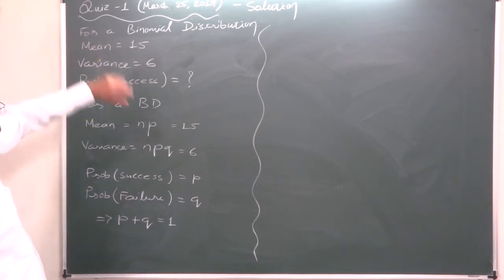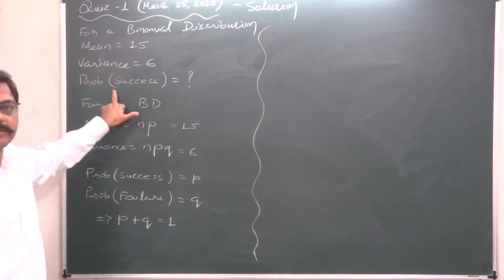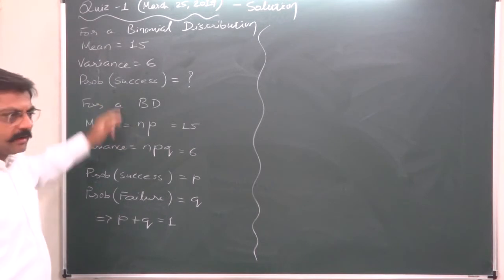And the first quiz was for a binomial distribution. Mean is 15 and variance is 6. What is the probability of success in this experiment?